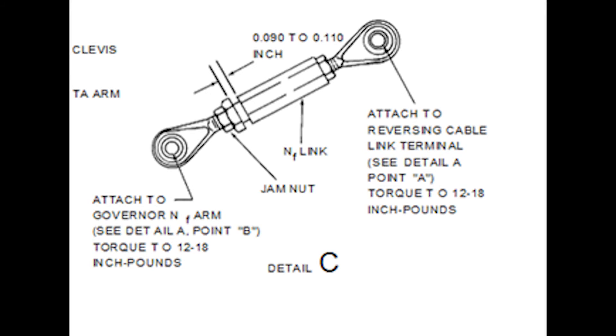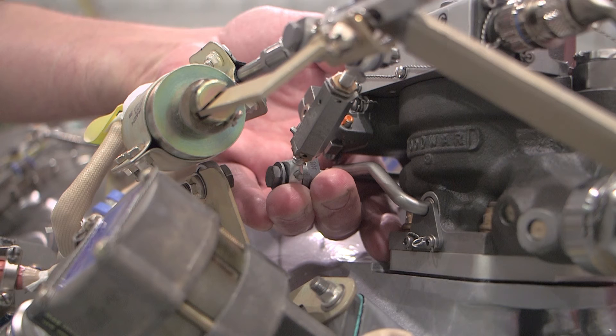Adjust the NF link to provide a 0.090 to 0.110 inch gap between the bottom of the NF link and the jam nut on the rod end. Connect and secure the NF link to the governor arm and to the reversing cable.